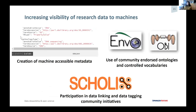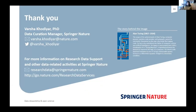The other part of what we're trying to do is increase the visibility of research data to machines, because that's what will enable data discovery to really take off. For the journal Scientific Data, we create machine-accessible metadata for every data descriptor published, using community-endorsed ontologies and controlled vocabularies to facilitate machine readability. We also participate in the Scholix project — a cross-publisher initiative to make it possible to identify where data are mentioned in research articles and tag those data in a way machines can easily find and access. Thank you for listening.